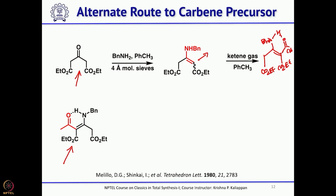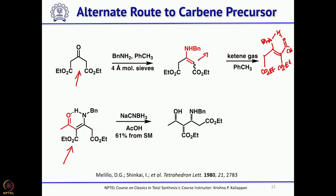When this ketone is reduced with sodium cyanoborohydride in the presence of acetic acid, not only is the ketone reduced but also the enamine portion, fixing three stereogenic centers — though of course the product is racemic, so both enantiomers are obtained.